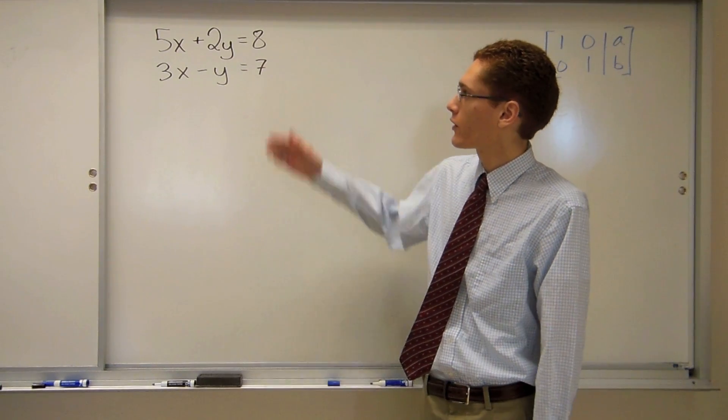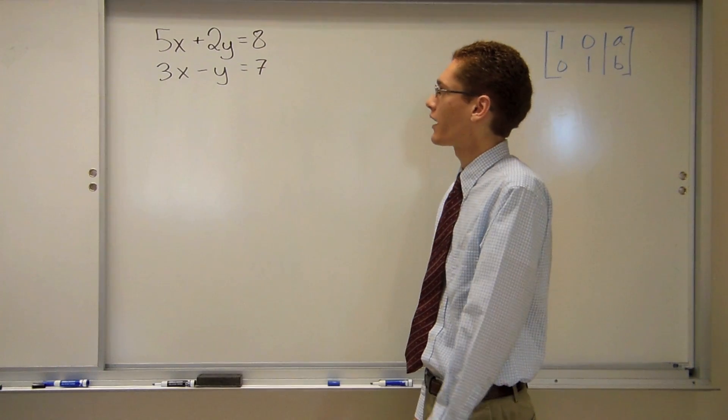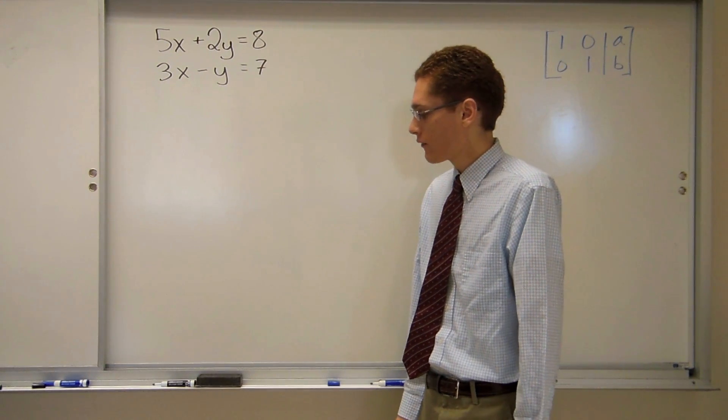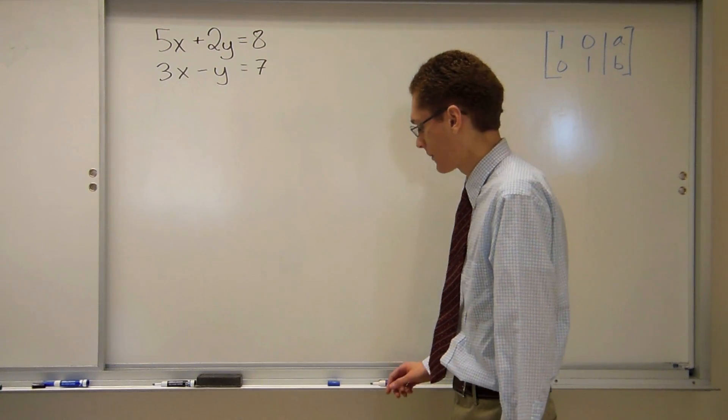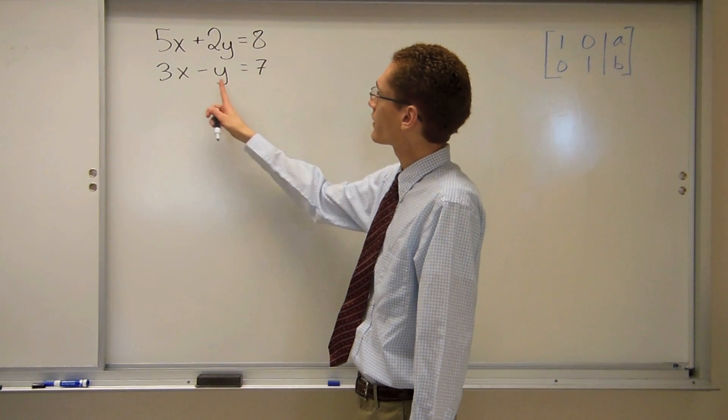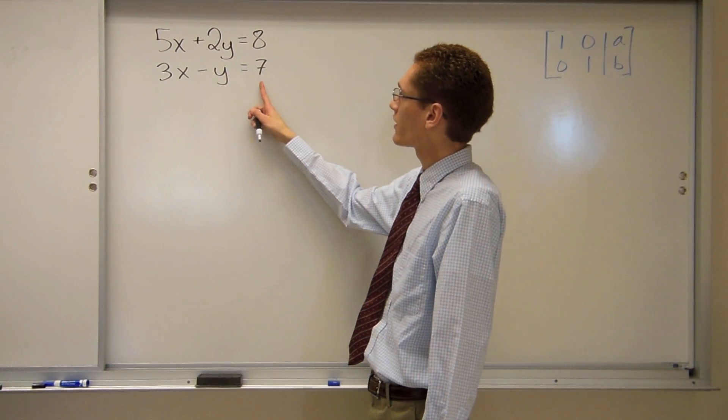I have the system of equations 5x plus 2y equals 8, and 3x minus y equals 7. First, I'll have to put that into an augmented matrix. I do that by lining up the x terms, the y terms, and the constants.